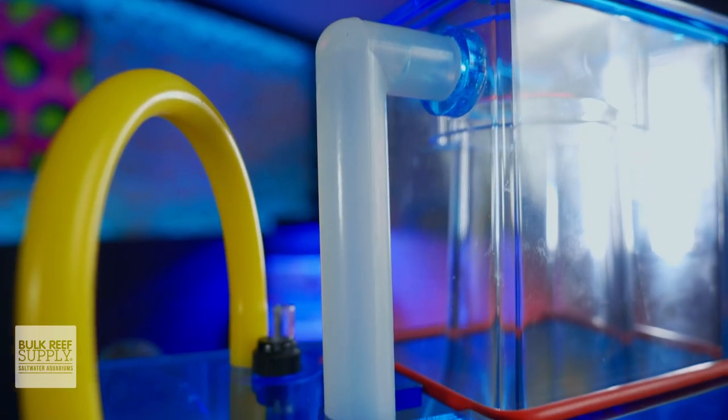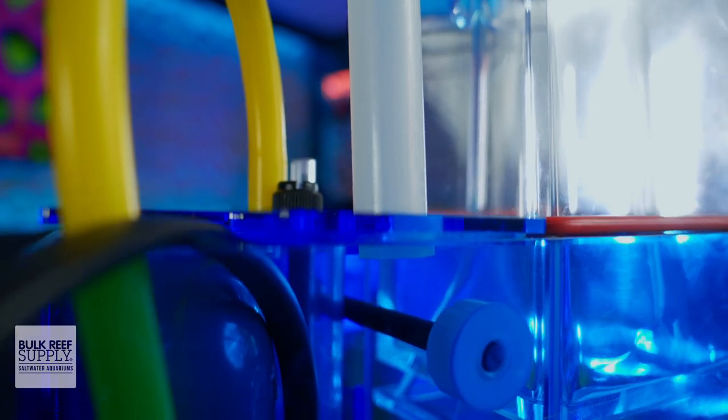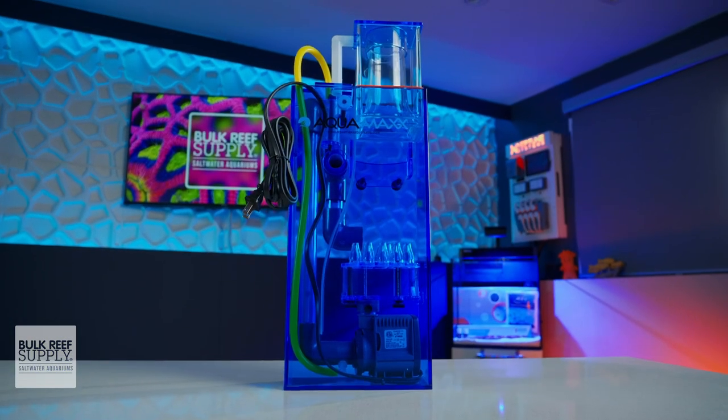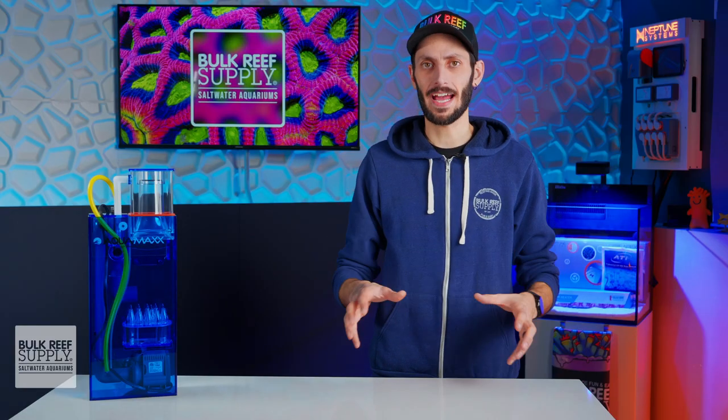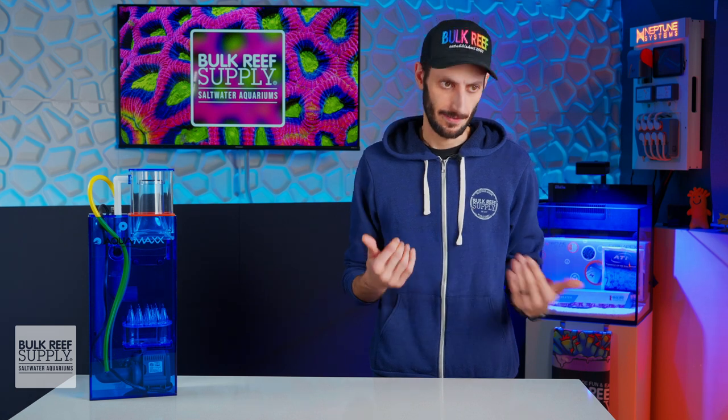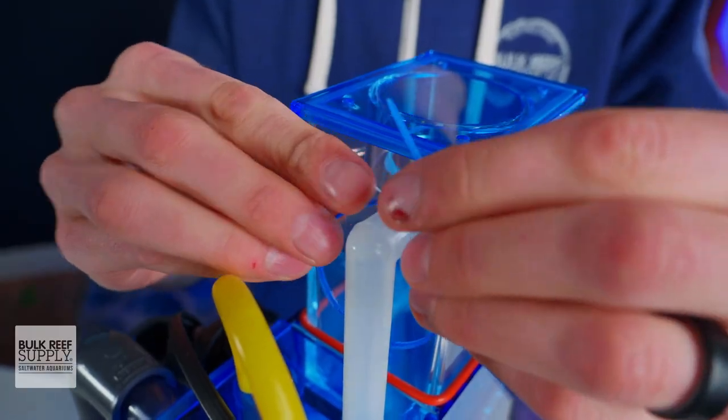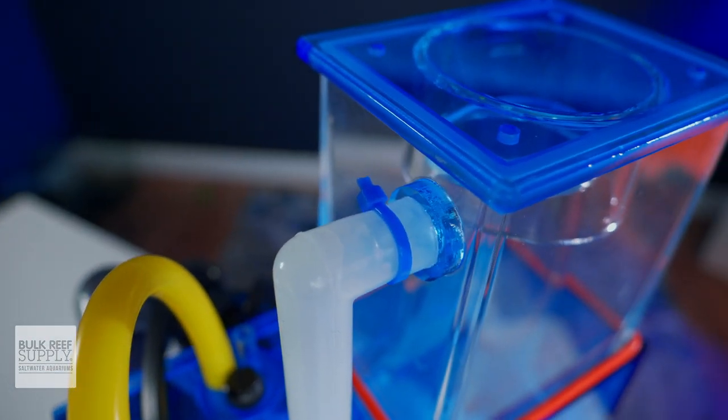The collection cup has an overflow port right up at the top to make sure that in the event the cup fills up and wants to overflow, it can do so back into the skimmer body where it's safe rather than onto the floor. It is a super important feature to have on a hang-on skimmer. You don't want wet floors, so I'm really glad to see it's there. I do have one tip though, and recommend using a small zip tie to lock that tube in place for added safety.